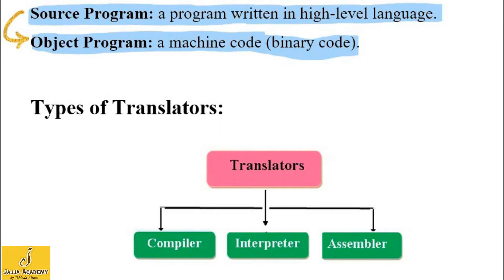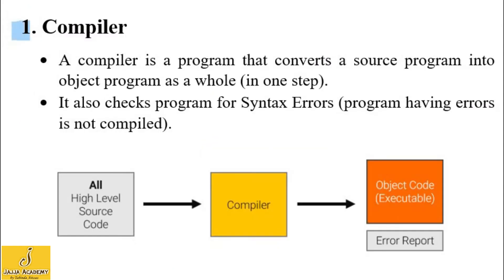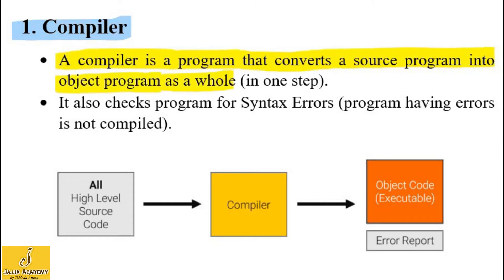There are different types of language translators: compiler, interpreter, and assembler. Let's discuss them in detail. A compiler is a software program that converts a source program into an object program as a whole.